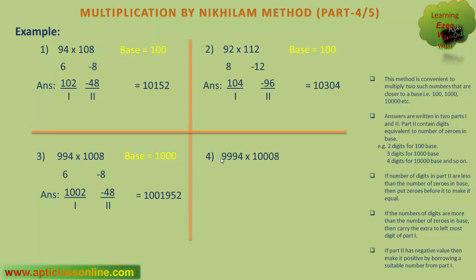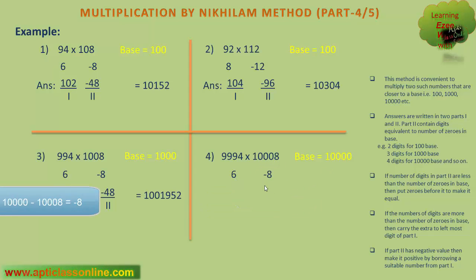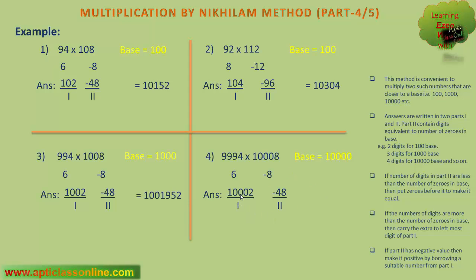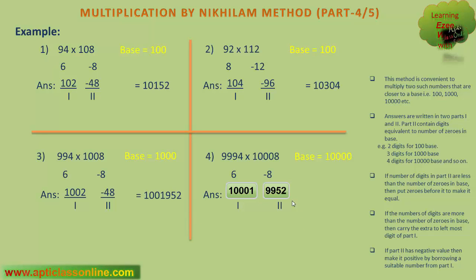Now the last question: 9994 multiplied by 1008. The base here is 10000. The first number is 6 less than 10000, and the second number is minus 8 less than 10000. While writing down the answer, we first write the difference of 9994 and minus 8, or 10008 and 6, that is 10002 — that is the first part. The second part will be the multiplication of 6 and minus 8, that is minus 48. Since the second part has a negative value, we borrow 1 from part 1. It will become 10000 here, because the base is 10000. So adding 10000 and minus 48 gives 9952. And the first part will become 10001, because 1 has been borrowed from 10002. We check whether the second part contains 4 digits — it already does.